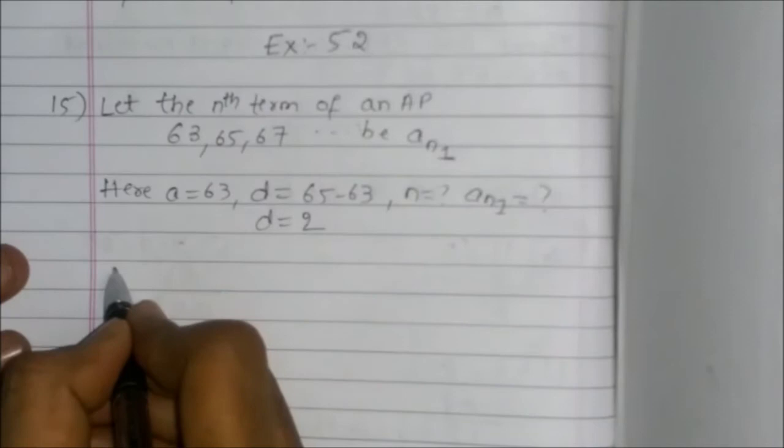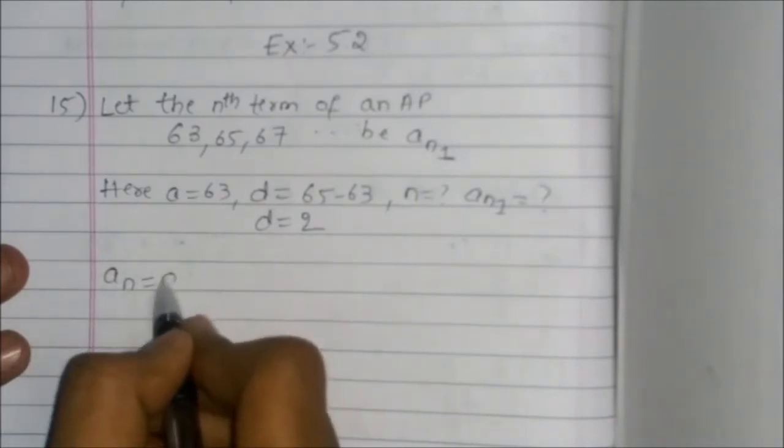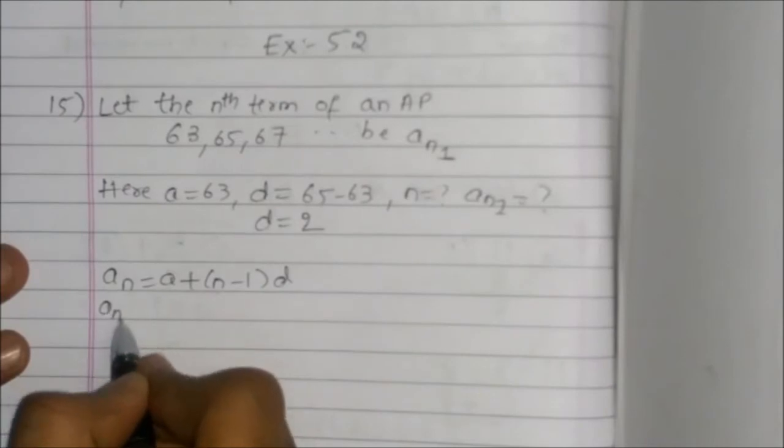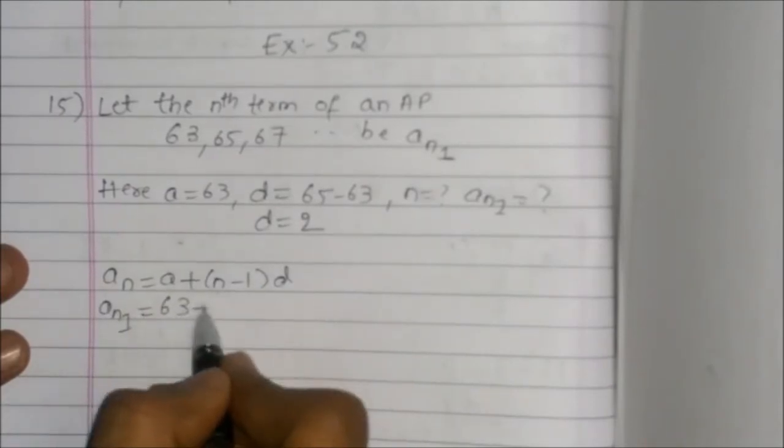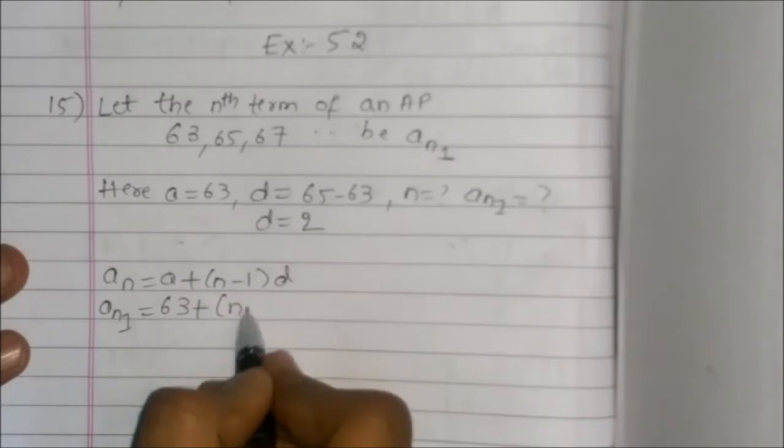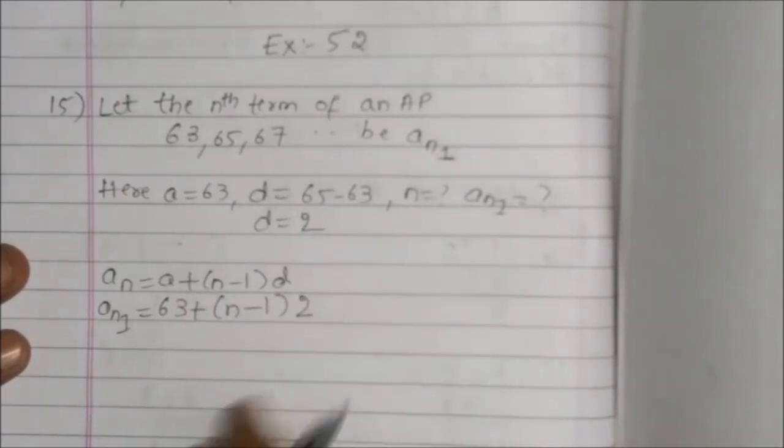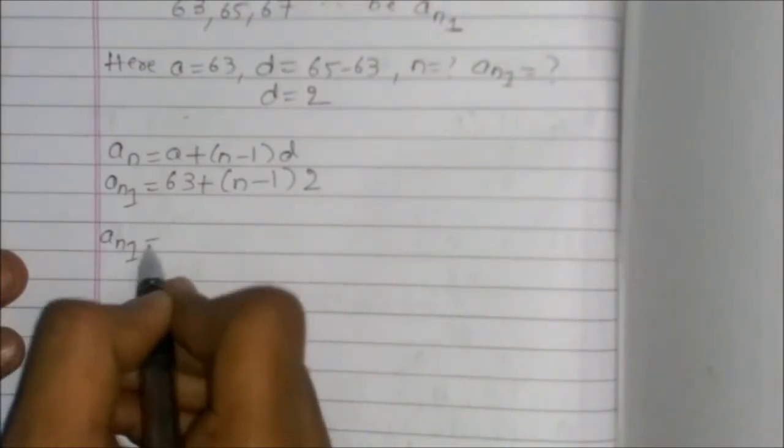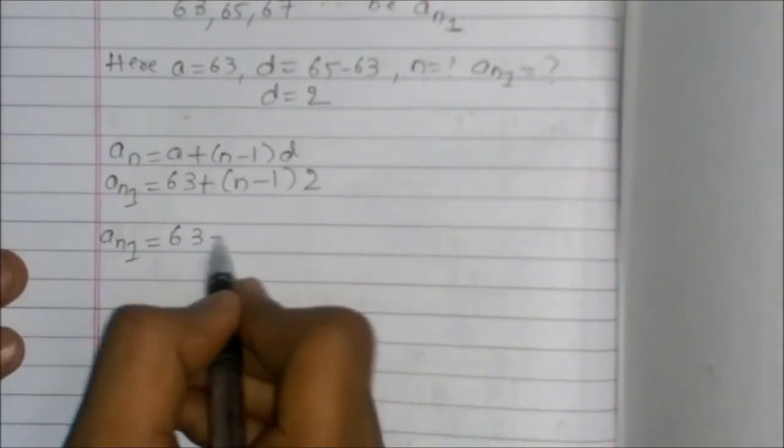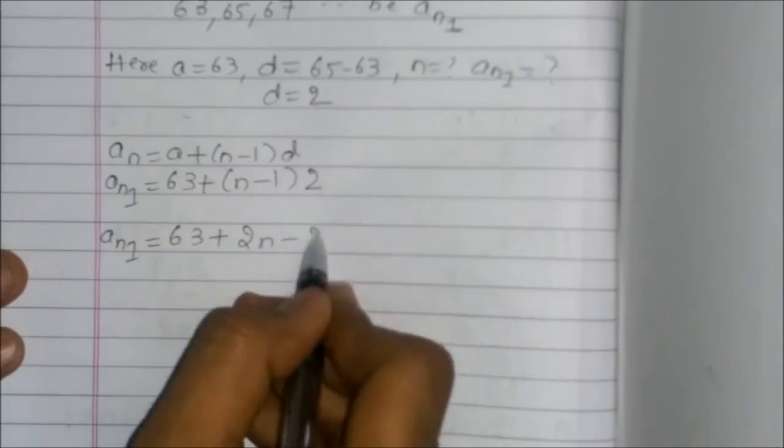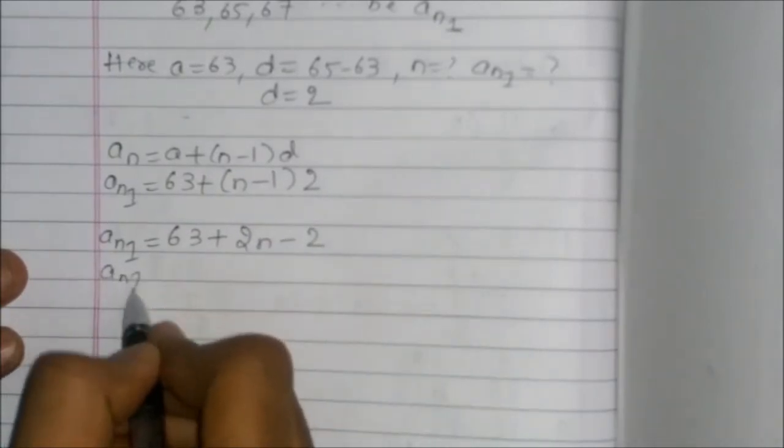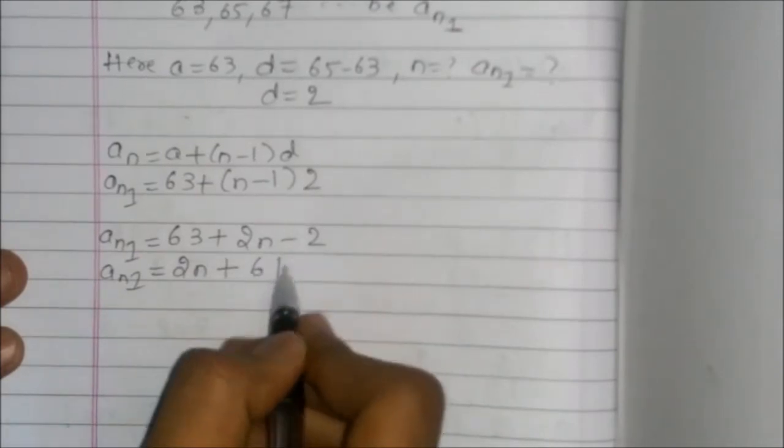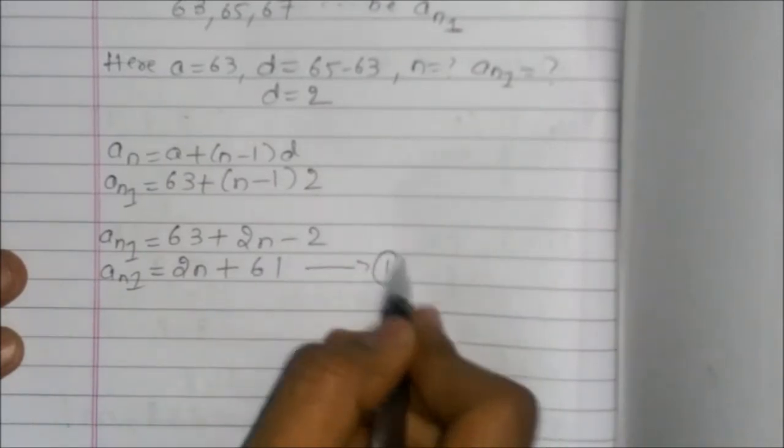We know that An is equal to a plus (n-1) times d. Here, An1 is equal to 63 plus (n-1) times 2. Now, An1 is equal to 63 plus 2n minus 2. An1 is equal to 2n plus 61. This is equation 1.